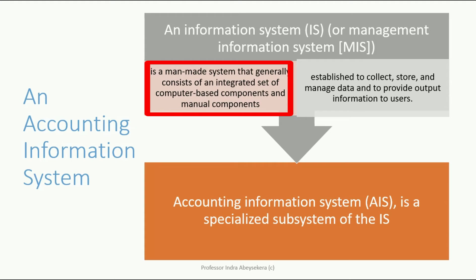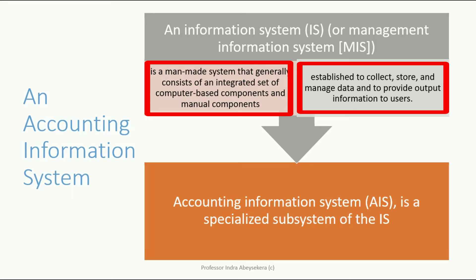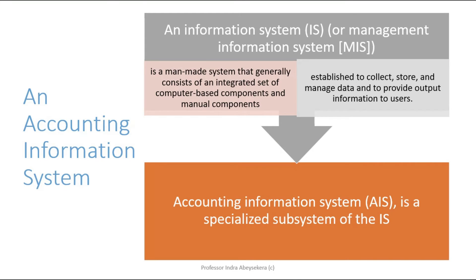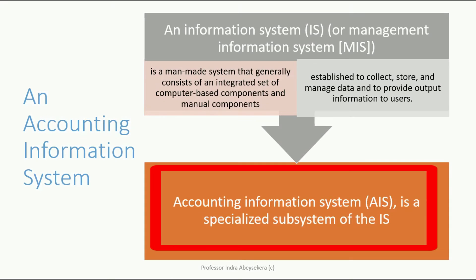The information system is established to collect, store, and manage data, and to provide output information to users. If you look at the entire information system as a single system — a single system of an integrated set of computer-based and manual components — an accounting information system becomes a specialized subsystem within that information system.